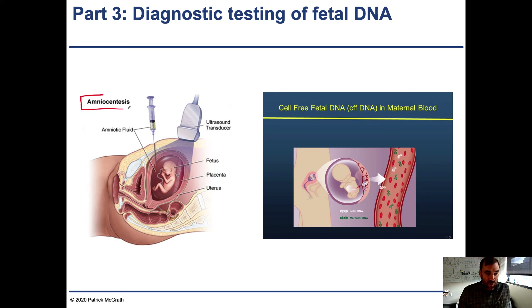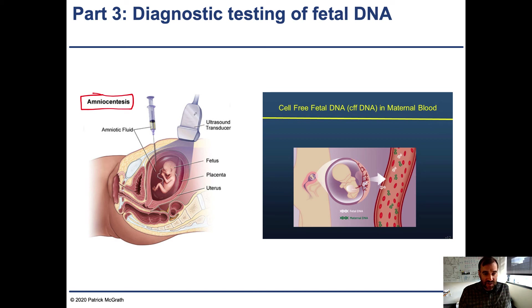There are two techniques for collecting fetal cells. The older approach is amniocentesis, which uses a very long needle to pierce through the uterus into the amniotic fluid. The amniotic fluid contains fetal cells that have sloughed off and can be used for karyotype analysis. An ultrasound is used to determine the exact position of the fetus before inserting the needle to take the amniotic fluid sample.